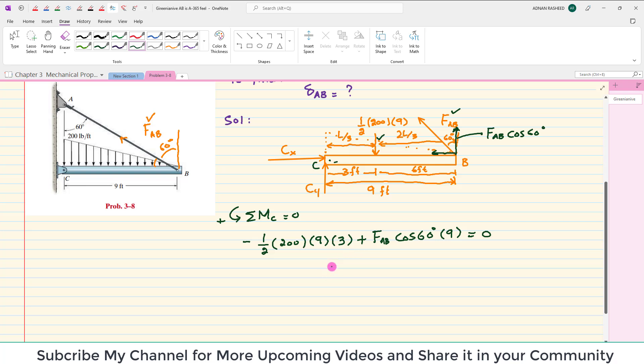When you solve this equation, you will get the value of FAB. FAB will become equal to 600 pounds.